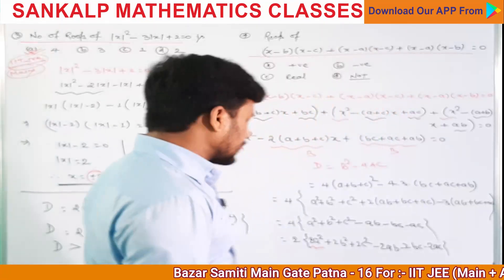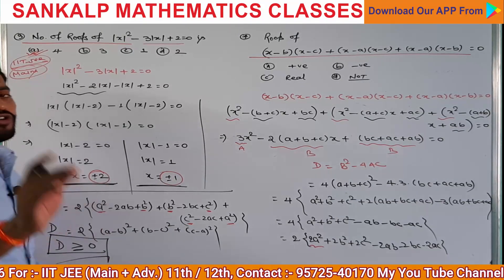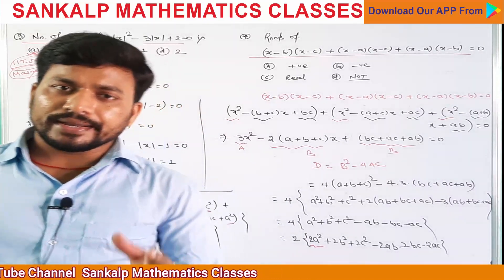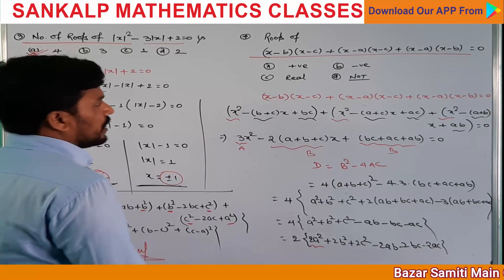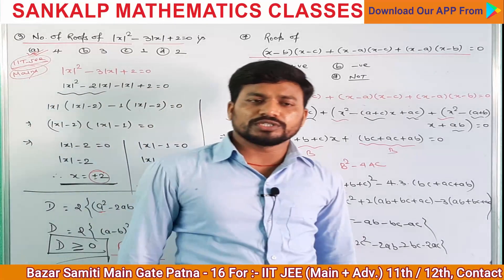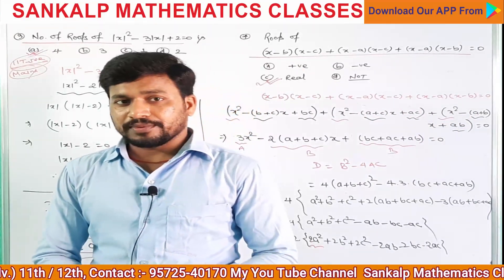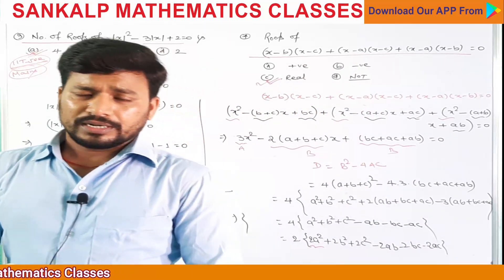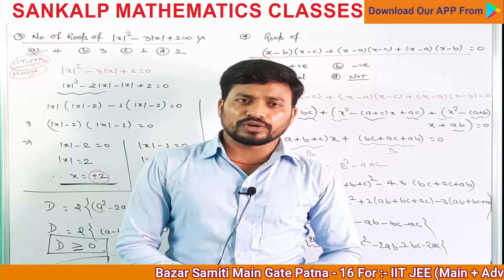जब D ≥ 0, तो roots real होगा। हम लोगों ने 12 points में लिखाया था — if roots are real then D ≥ 0। इसका मतलब roots real होगा, option C हो जाएगी। Nature of roots से यह basic questions आप देखे हो। अगली lecture number 4 में advanced questions करेंगे। आप लोग lectures 1, 2, 3 complete करोगे और questions solve करने की कोशिश करोगे।